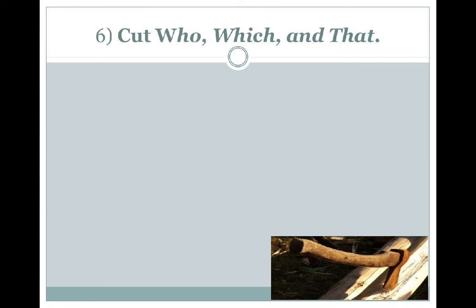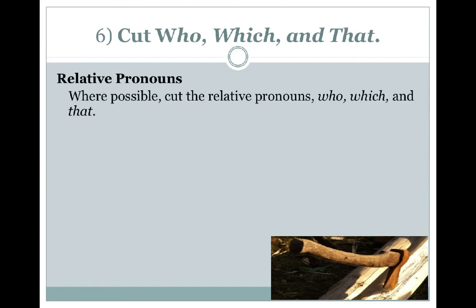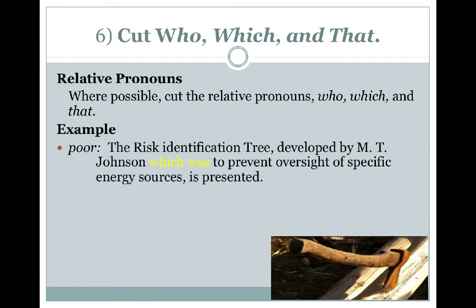As much as possible, cut 'who,' 'which,' and 'that.' Almost always they're taking up extra room in your writing. They're called relative pronouns, which means they can refer to various different things, and often we use them without any purpose whatsoever. In the example here, we have: 'the risk identification tree developed by MT Johnson, which was to prevent oversight of specific energy sources' — the relative clause adds length without need.